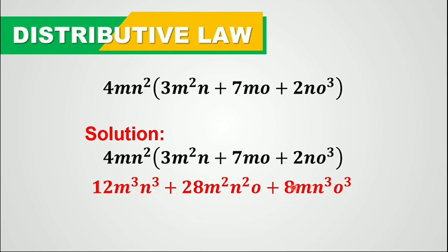As you can see, we cannot combine any of these terms because their variables are different — the literal coefficients are different. This is m cubed, this is m squared, and this is m, so the exponents are different. So the final answer is: 4mn squared times the quantity of 3m squared n plus 7mo plus 2no cubed equals 12m cubed n cubed plus 28m squared n squared o plus 8mn cubed o cubed.